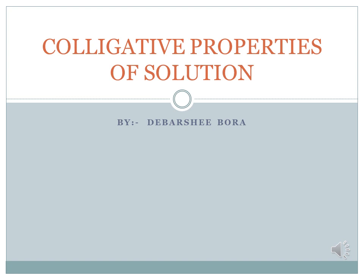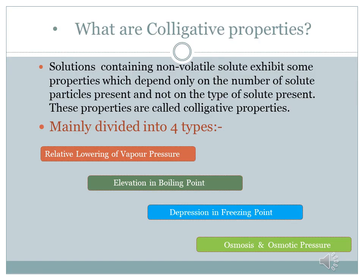Let us see what colligative properties are and what are the types of colligative properties. The name colligative comes from Latin — splitting the word into 'co' and 'ligar': 'co' means together and 'ligar' means bind. So colligative properties means binding together — properties that depend on the number of solute particles irrespective of their nature, relative to the total number of particles present in the solution.